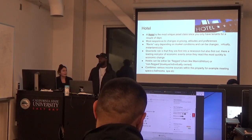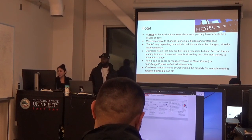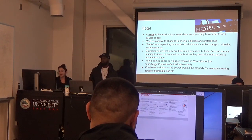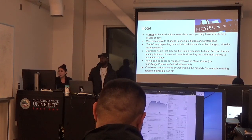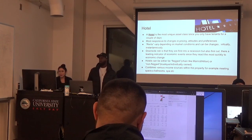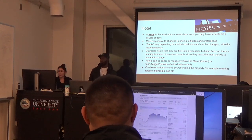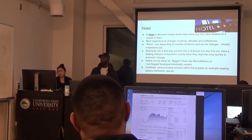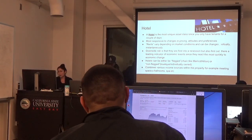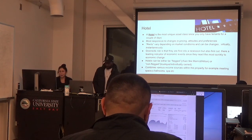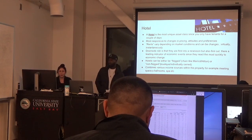The last type of real estate is a hotel. This one is the most unique asset class, since you only have tenants for a couple of days while they're staying at the hotel. It's the most responsive to changes in pricing, attitudes, and preference. The downside risk is that they are first into recession, but also first out. They're the leading indicator of economic events, because they feel most of the early economic change. They also combine various income sources within the property — for example, meeting spaces, ballrooms, and spas — to build their income just in case they aren't making enough by renting out the rooms.